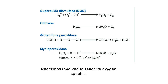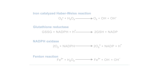This picture shows the reactions involved in various reactive oxygen species. The first reaction is synthesis of hydrogen peroxide by superoxide dismutase. The second is involvement of catalase, which converts hydrogen peroxide into water and oxygen. The third is glutathione peroxidase, which converts reduced glutathione to oxidized glutathione.